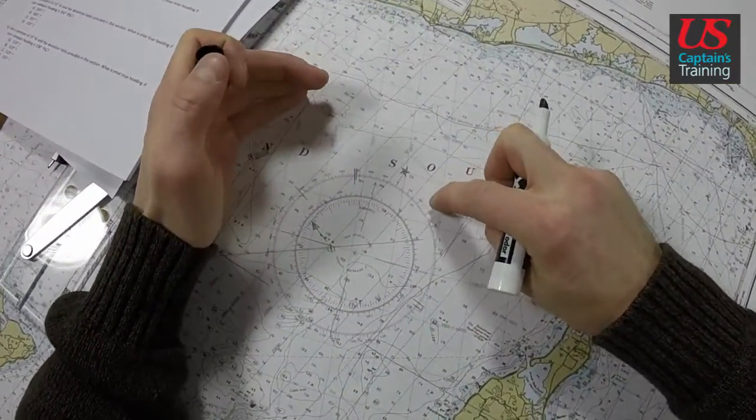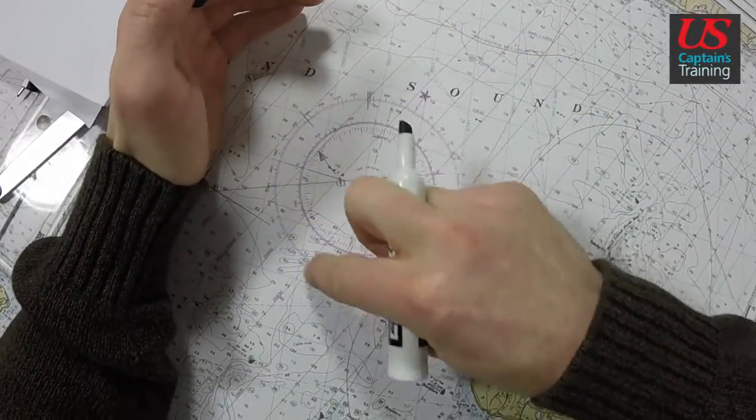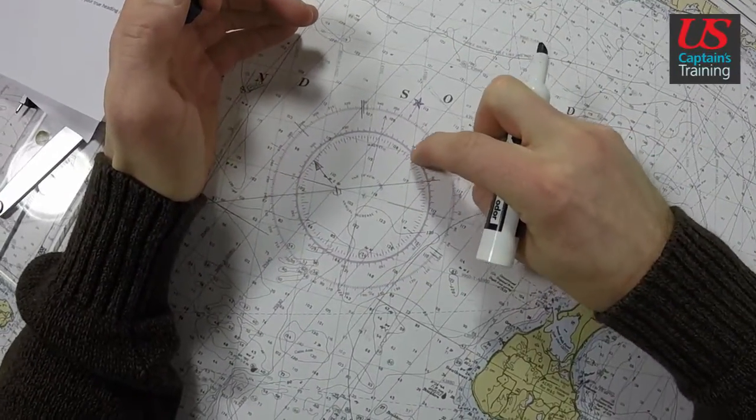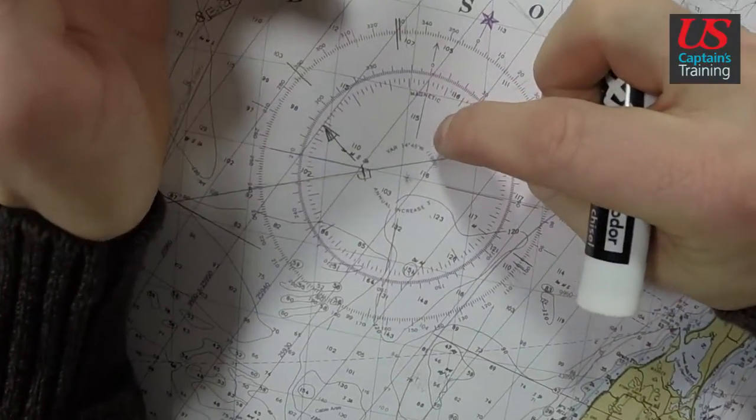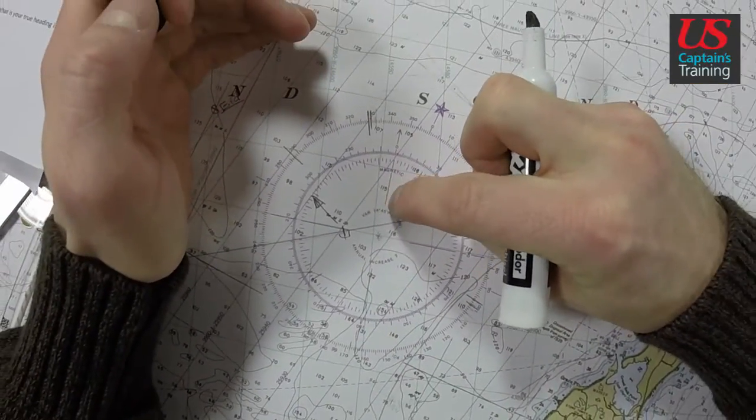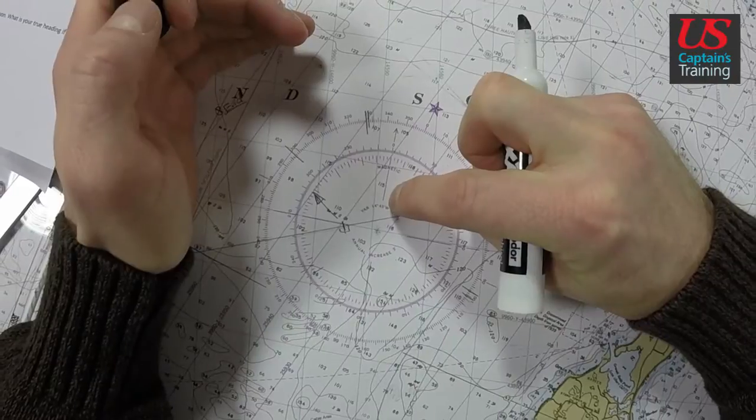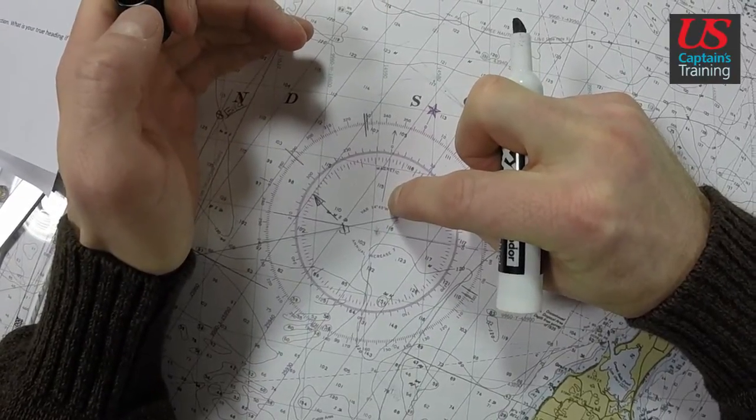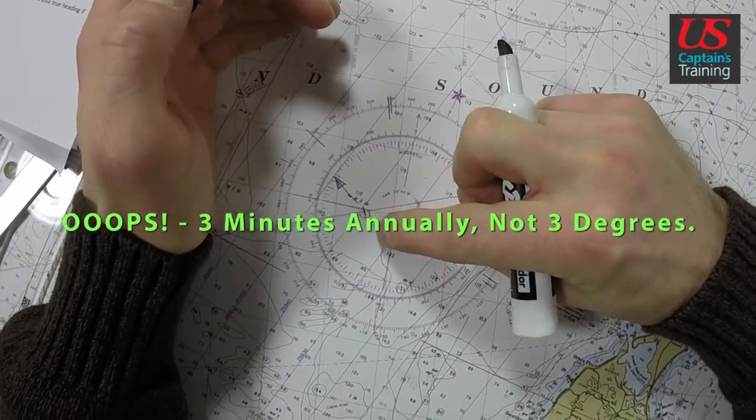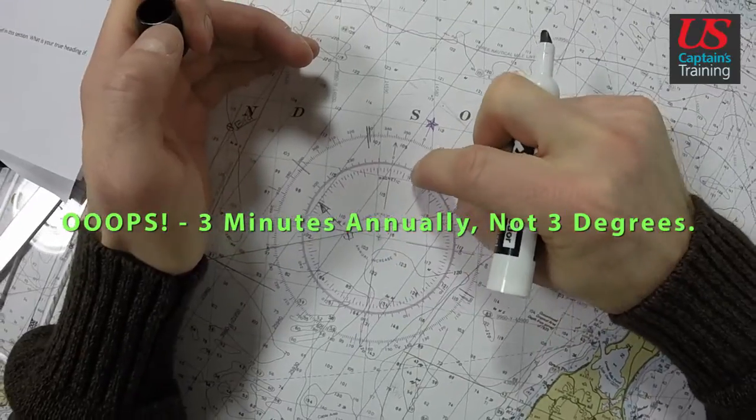You see this compass? This outer ring is true. This inner ring is magnetic. And in there even further, it says, variation, 14 degrees, 45 minutes west. Annual increase of 3 degrees. This is magnetic.